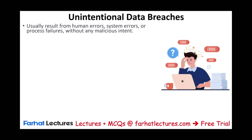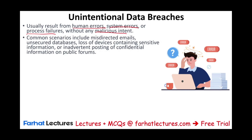Unintentional data breaches usually occur from human errors — people made a mistake — or the system itself fails to conduct the transaction as expected, which is process failure. There is no malicious intent. Common scenarios include misdirected emails where sensitive information is sent to the wrong person, an unsecured database, a lost device containing sensitive information, or accidentally posting confidential information on a public forum.